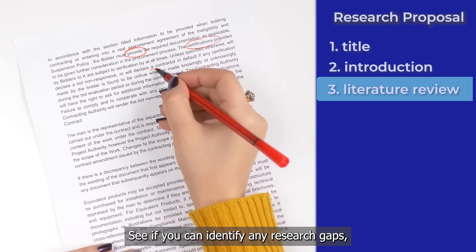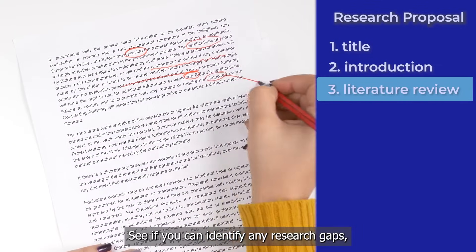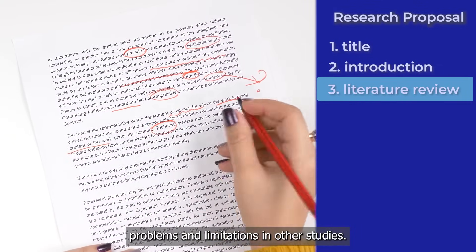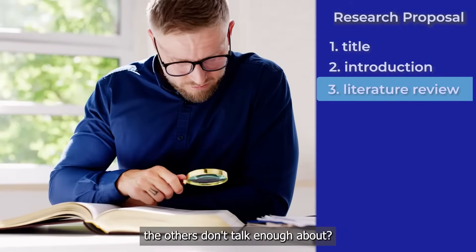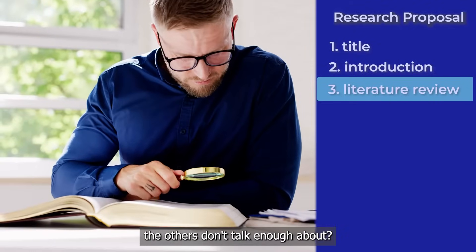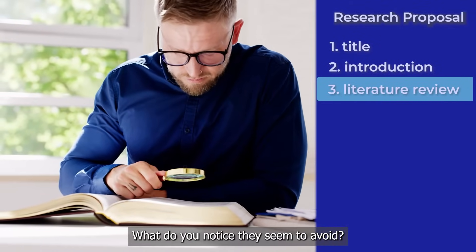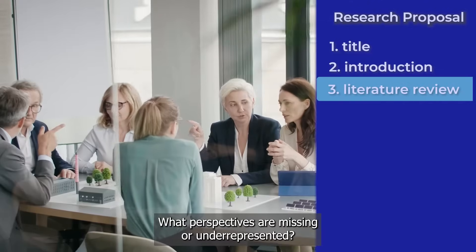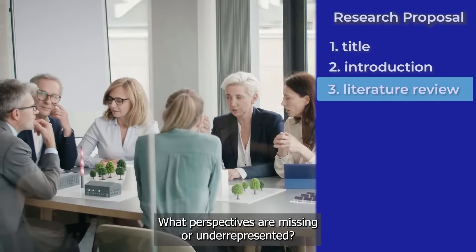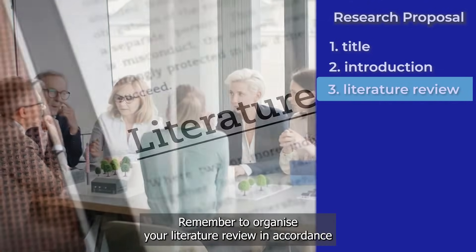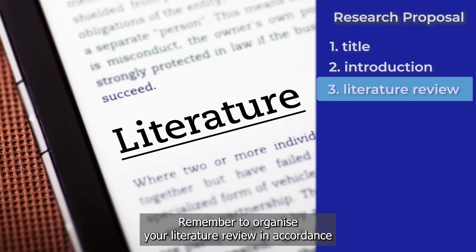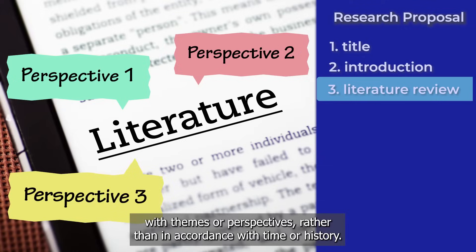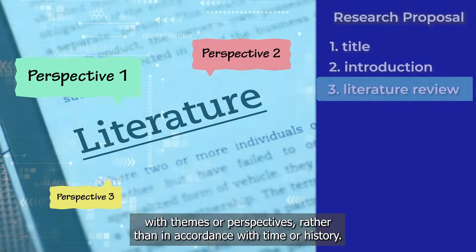See if you can identify any research gaps, problems and limitations in other studies. What do you notice the others don't talk enough about? What do you notice they seem to avoid? What perspectives are missing or underrepresented? Remember to organize your literature review in accordance with themes or perspectives rather than in accordance with time or history.